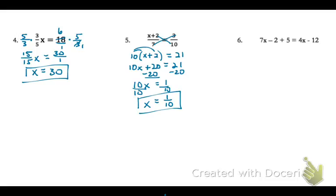Number 6, I take a look and I notice that I have variables on both the left side and the right side of my equal sign. I also, on the left side of my equal sign, I have a negative 2 plus 5. So that's what I'll do first, is I'll simplify either side of the equal sign. So I'll go ahead and combine those, which will give me a positive 3. And then just bring down my 4x minus 12.